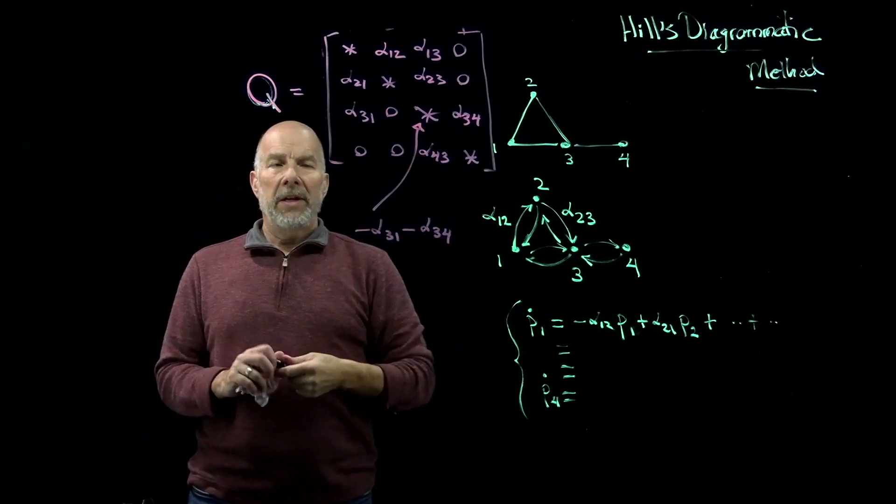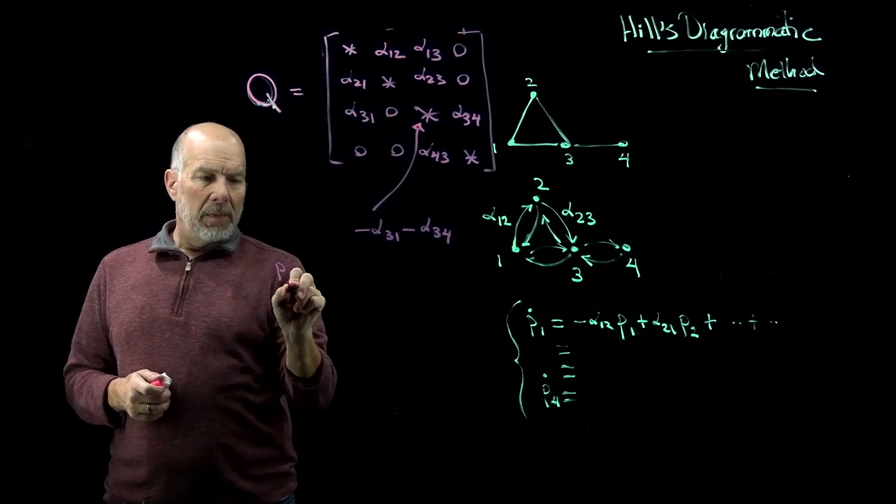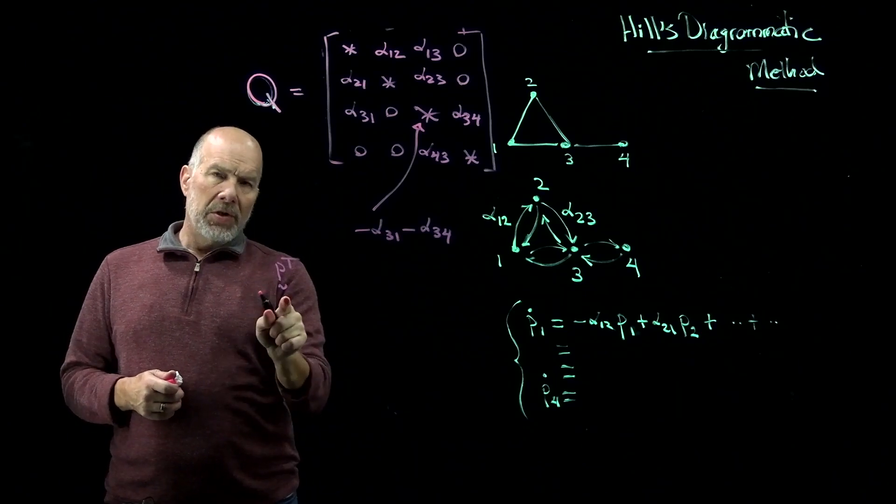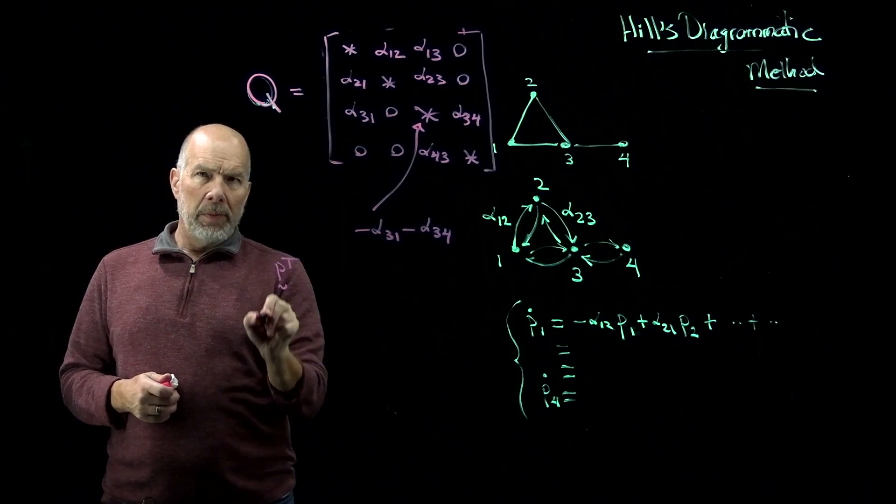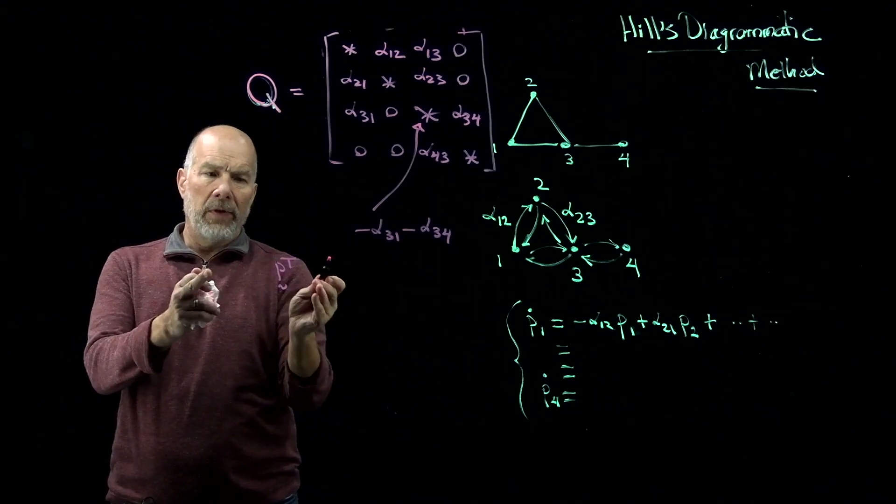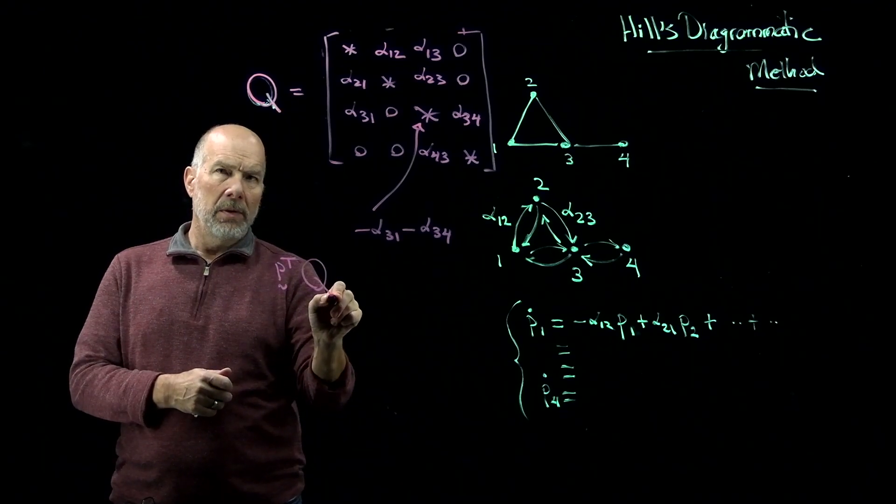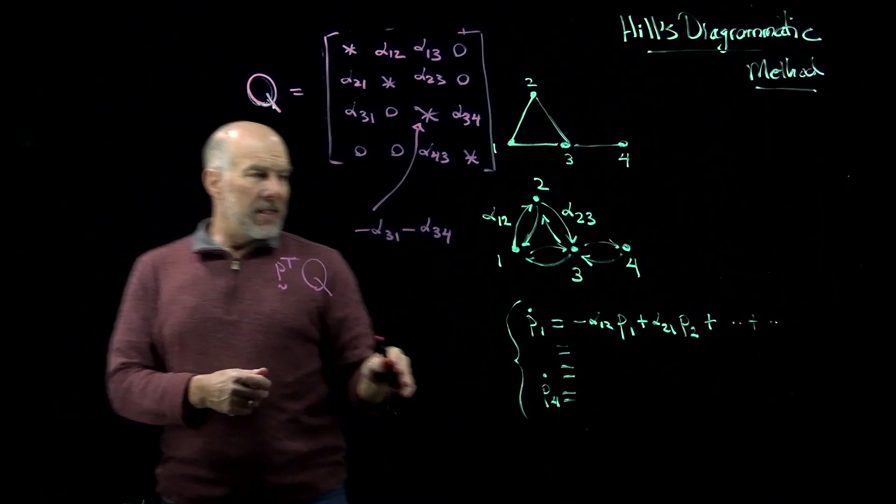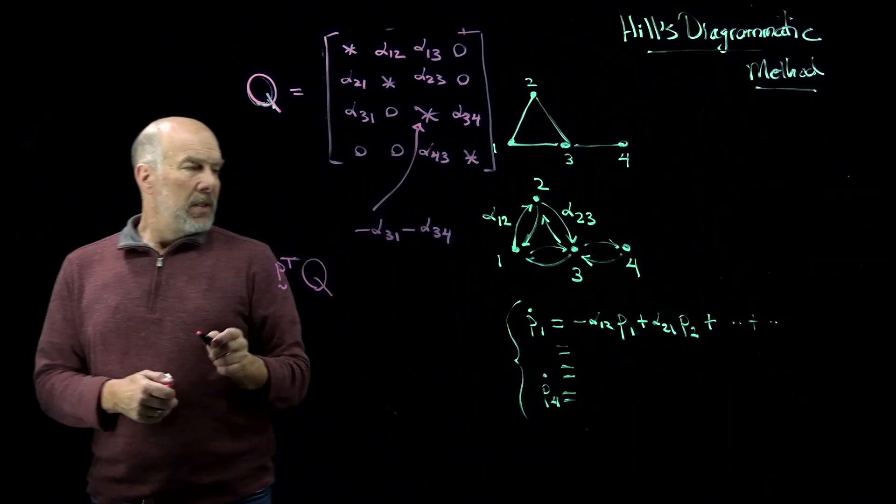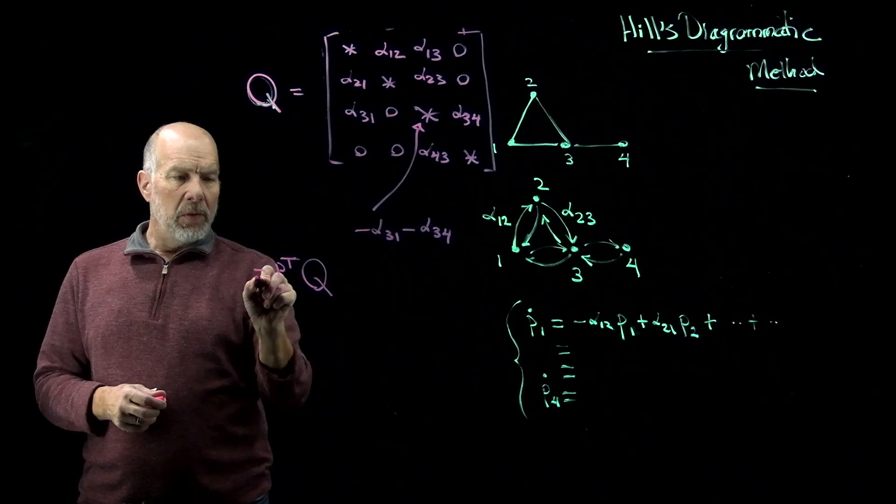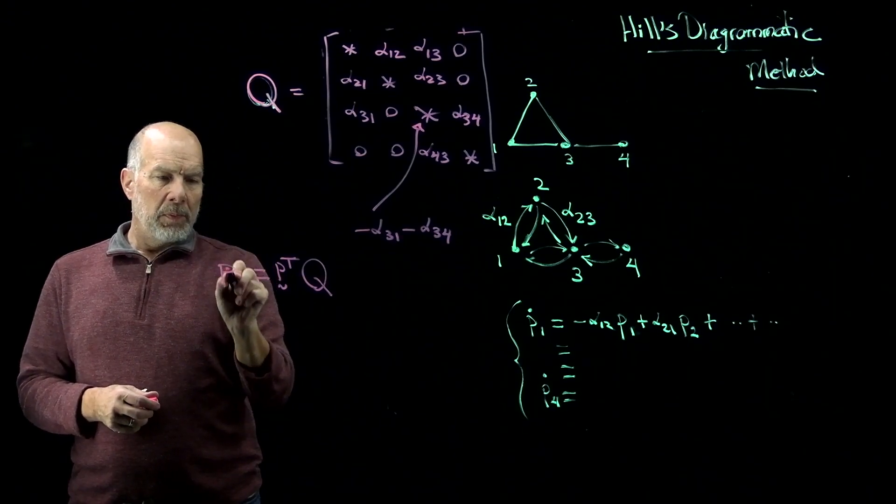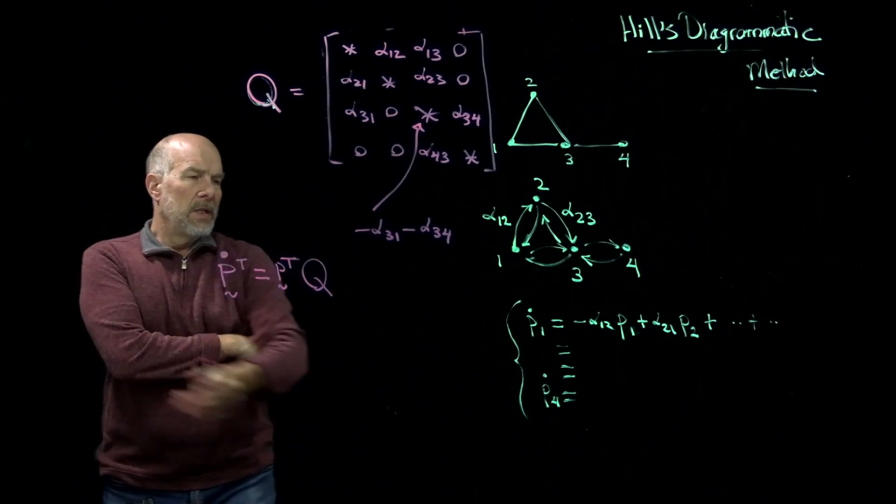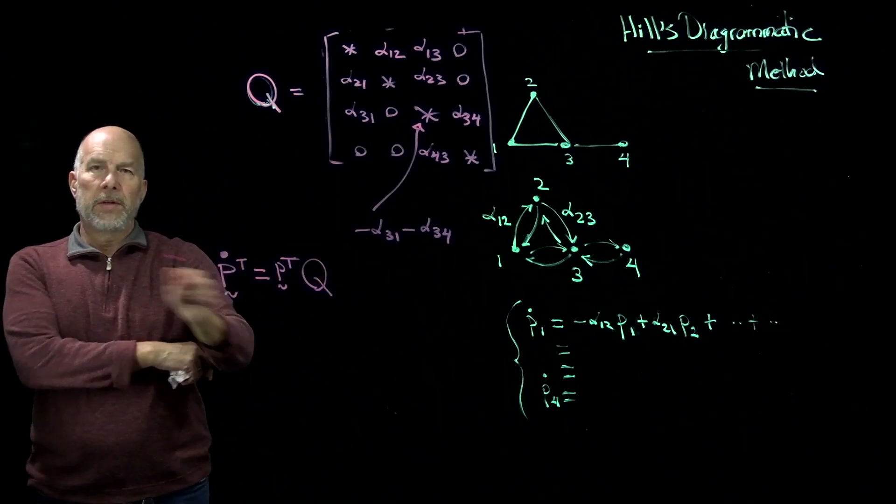So if we take this matrix and multiply it on the left by a row vector. P underscore is a column vector, P1, P2, P3, P4, but then I put the transpose, and now it's a row vector. If I multiply that times Q, that's essentially the right-hand side of this set of equations equals P, rate of change, transpose. This set of equations over here is equivalent to this little matrix equation.